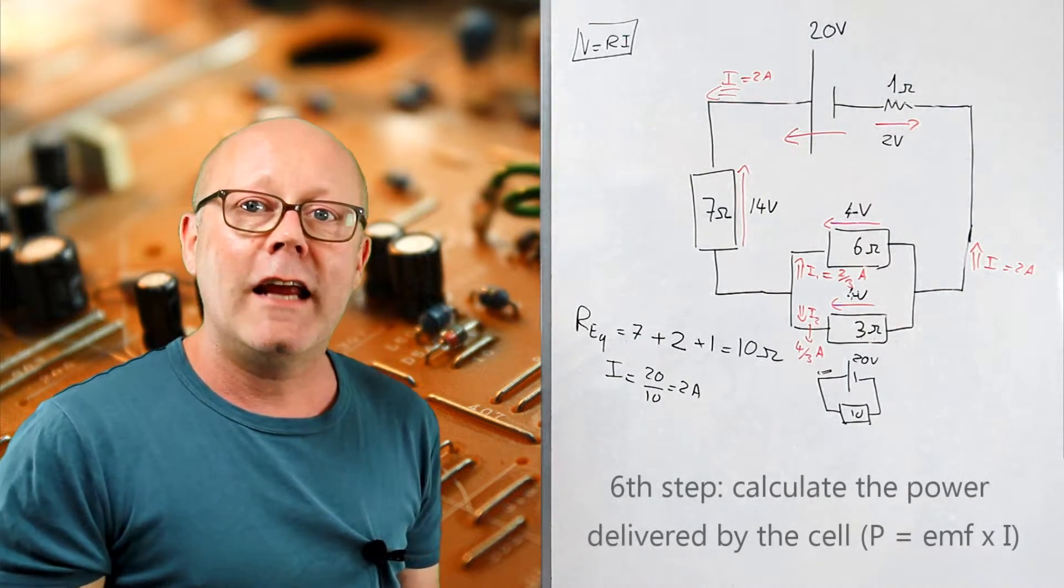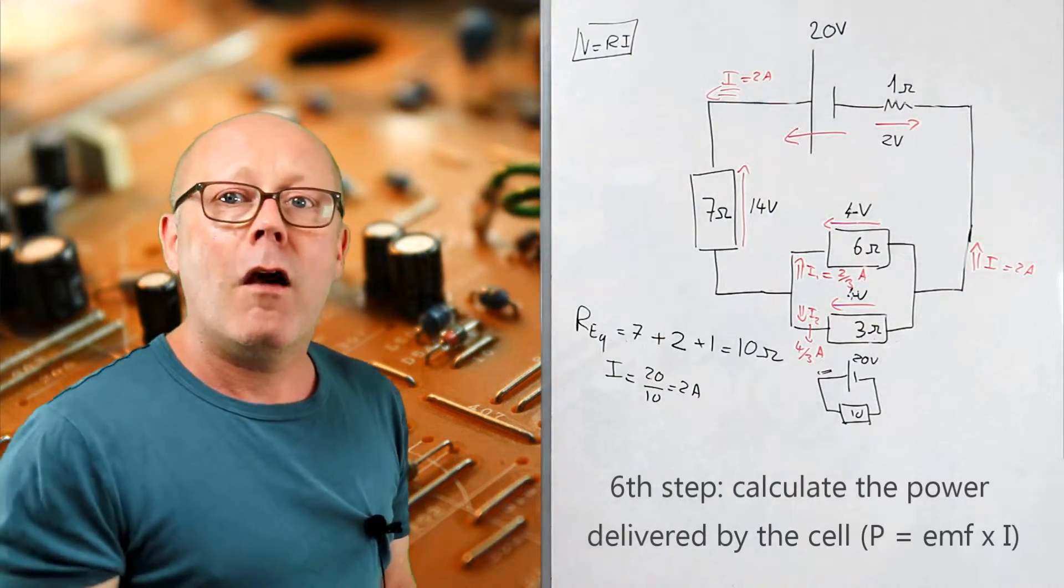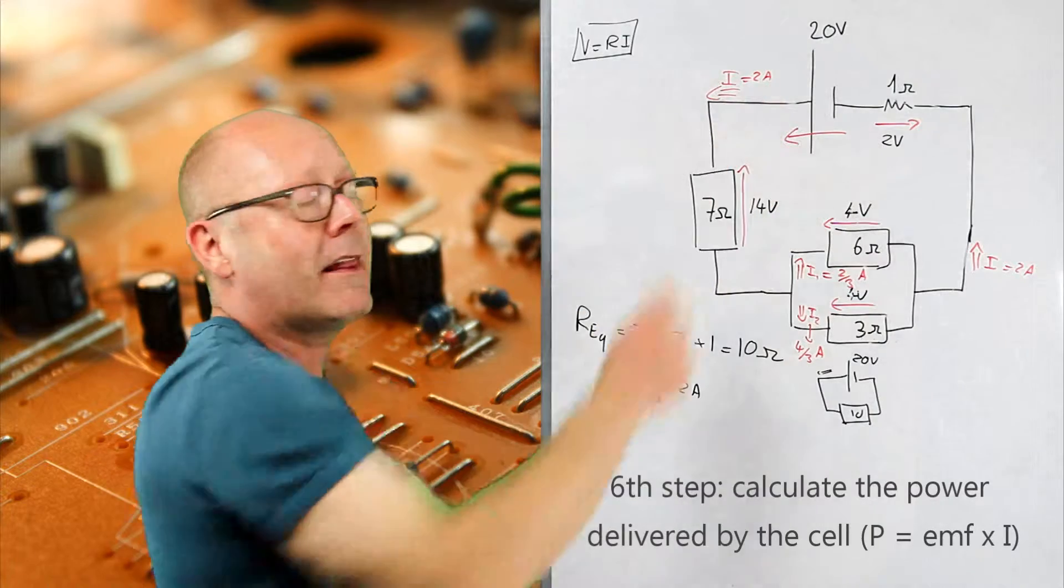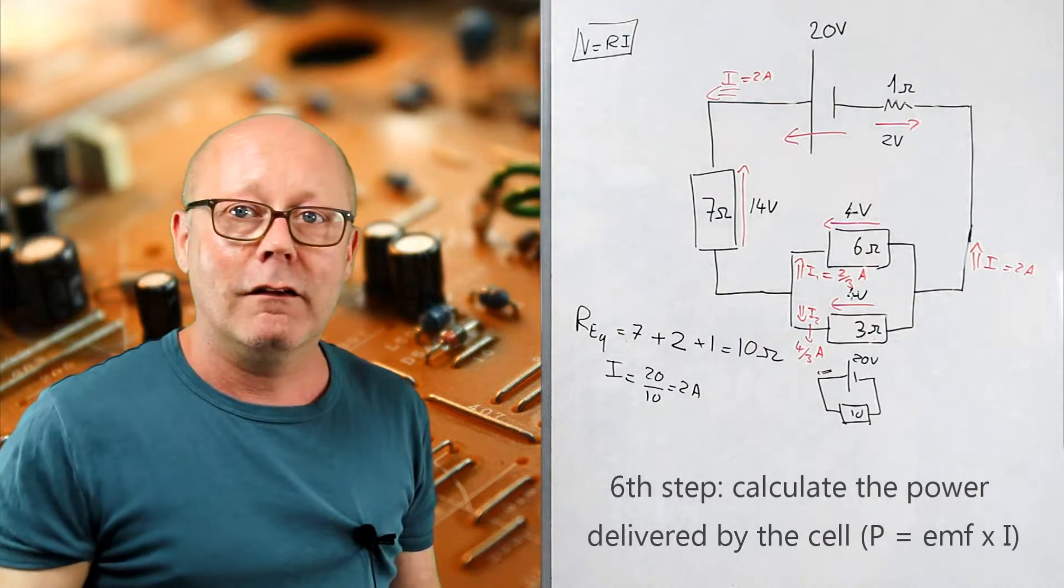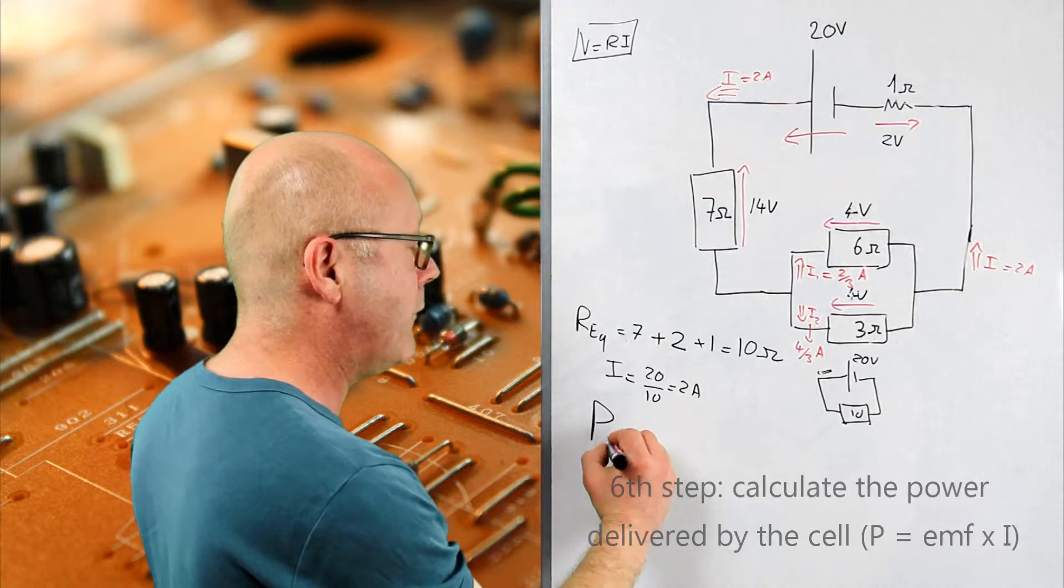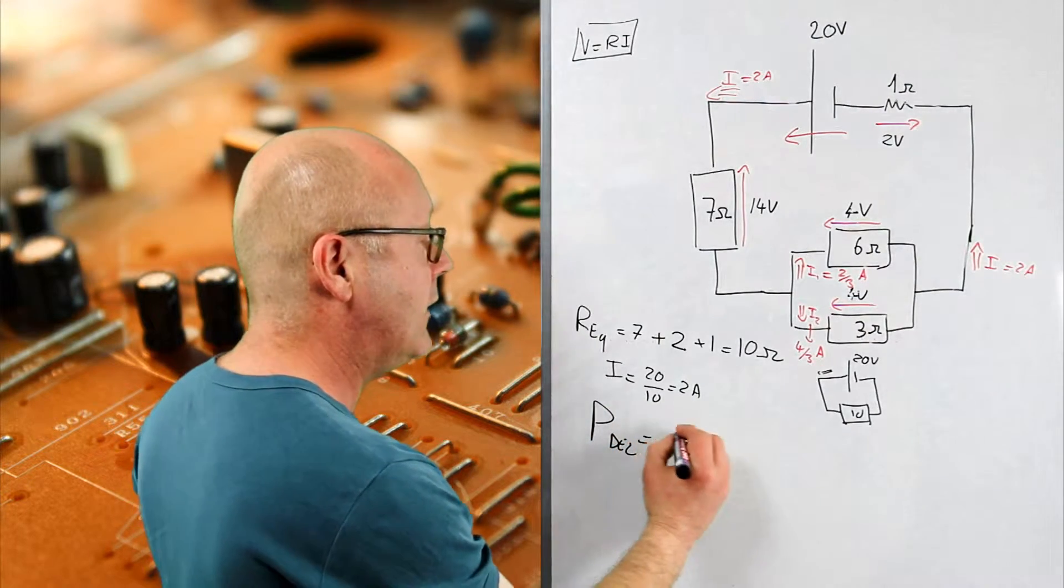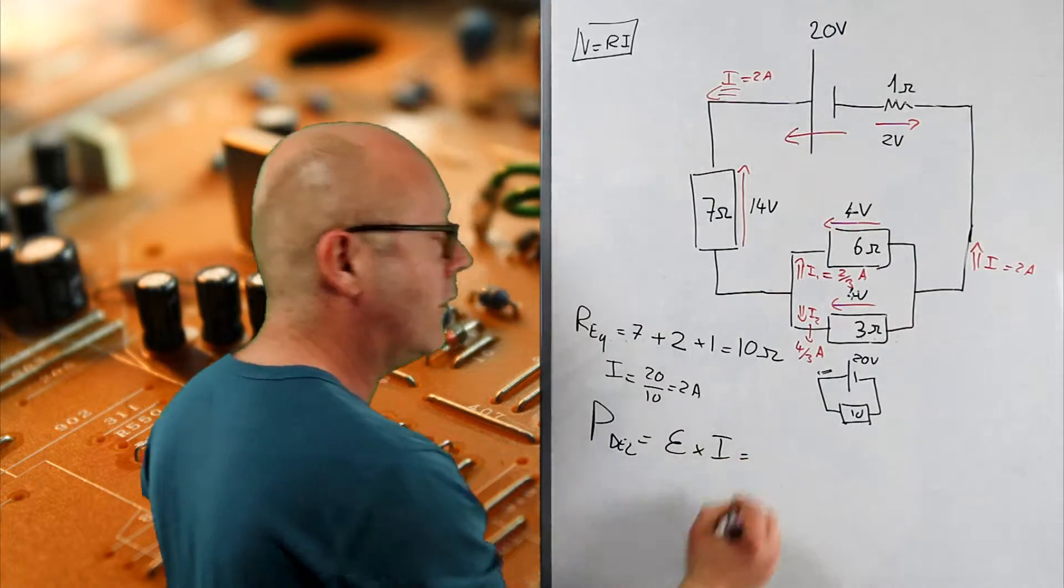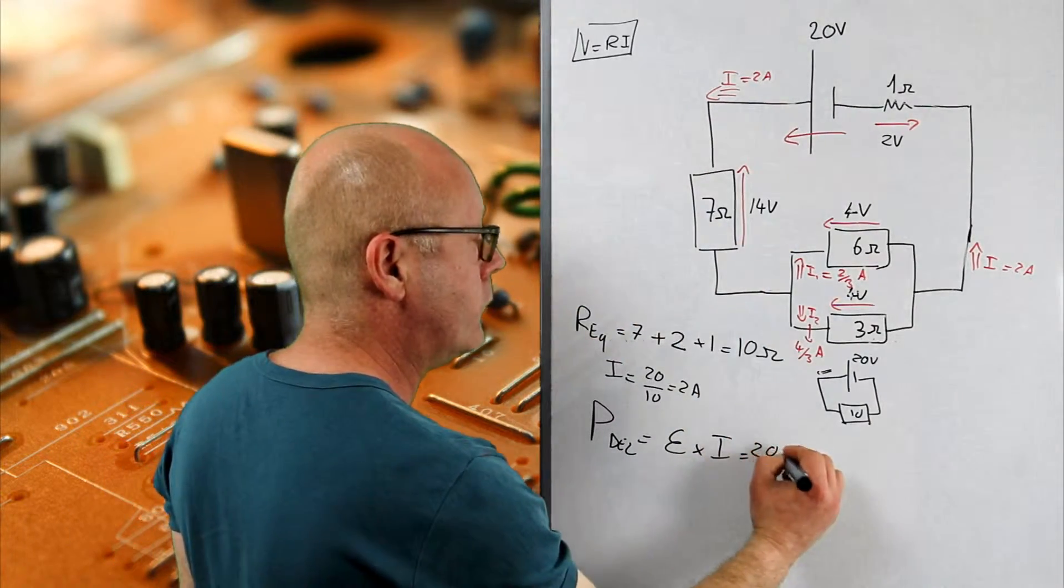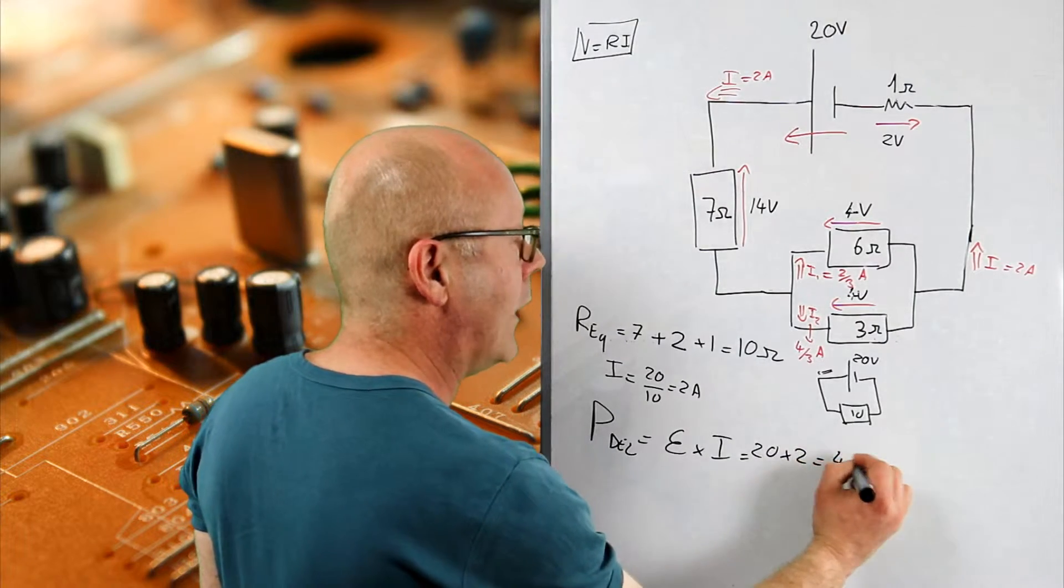Now I need to calculate the power delivered. What is the power delivered? It's the energy given to the circuit by this battery per second. And the formula to find this is very simple. The power delivered by the battery, it's its emf multiplied by the current it generates, so it's 20 by 2, 40 watts.